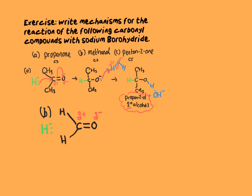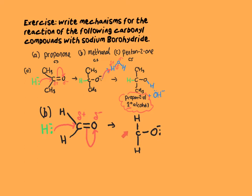Let's now look at methanal. Exactly the same mechanism — put your dipole in. The hydride ion attacks the electron-deficient carbon. The pi electrons move onto the oxygen. The intermediate shows the oxygen with a lone pair of electrons that have come from the pi bond — this is really important to include. There's the original hydrogen, and here is the hydrogen that's come from the hydride ion. This intermediate then completes the reaction by picking a proton off a molecule of water.